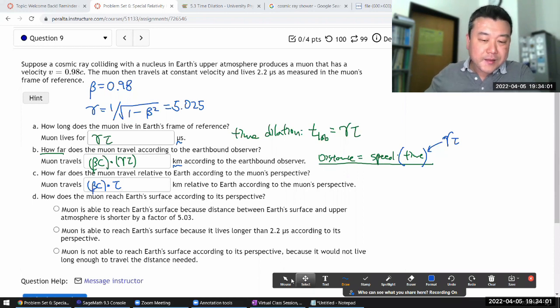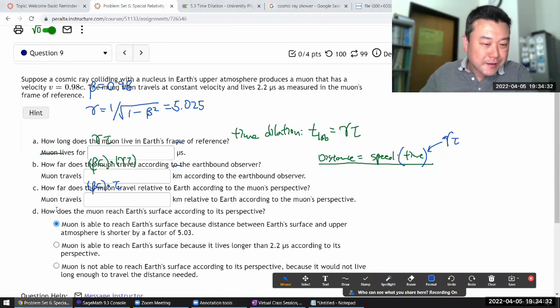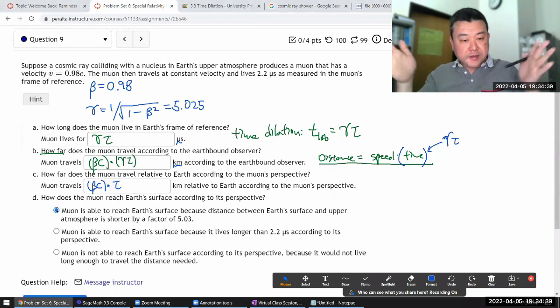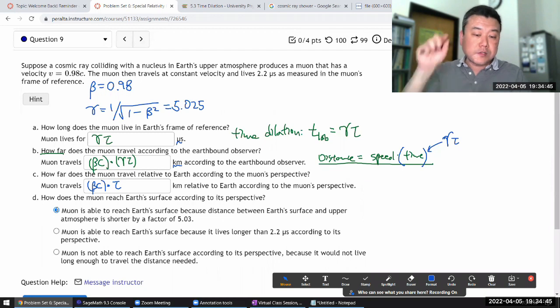And part D gets to that example that I was pointing to earlier. Given that muon has five times less time, how does it, how does the end result end up in the same with a perspective in B and C? It's that, it's because distance between Earth's surface and upper atmosphere is shorter length contraction by this factor. Gamma. I didn't realize the question did that for me. So that's why, it's because the distance is length contracted in the shorter amount of time in muon's reference frame. It still travels between the two same points.